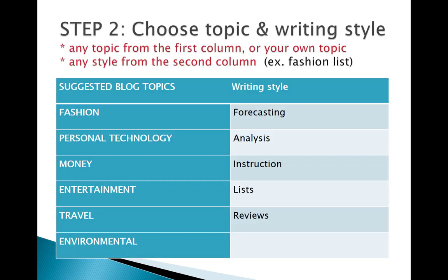The second step is to choose a topic and a writing style. For example, looking at fashion, you could have fashion forecasting — what's big for spring — or fashion instruction, such as how to properly use makeup or hair color. Looking at travel, it could be a list of places to go this spring or summer, or instruction like how to get the best deals when you travel.